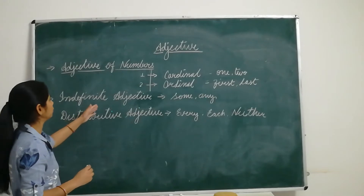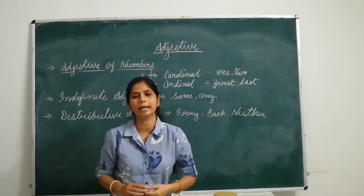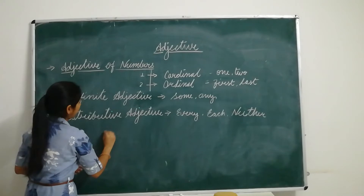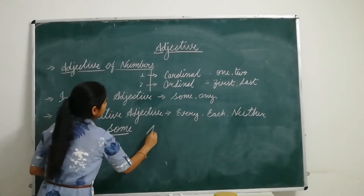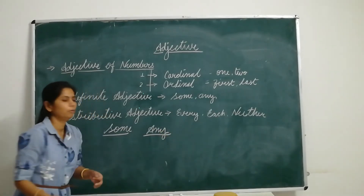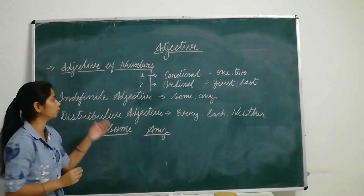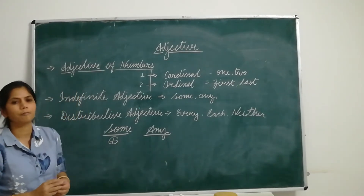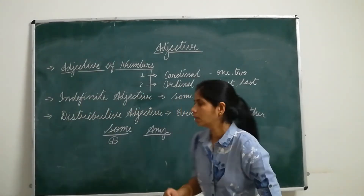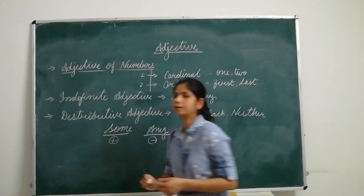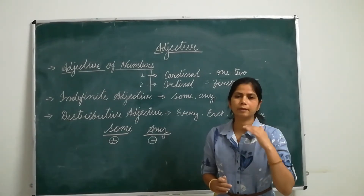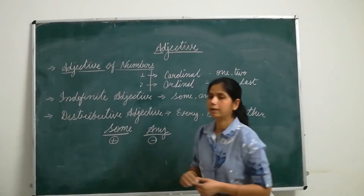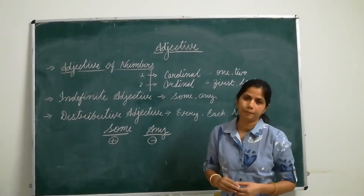Some students feel confusion between indefinite adjectives 'some' and 'any'. In detail, we will see what is the difference between them and where we use 'some' and where we use 'any'. When we want to use an indefinite adjective, we use 'some' in a positive or affirmative sentence. In a negative sentence, we use 'any'. There are different types of sentences: assertive sentence, negative sentence, and interrogative sentence. When our sentence is assertive, we use 'some', and when our sentence is negative, we use 'any'.